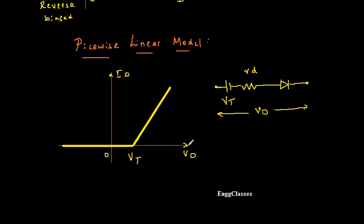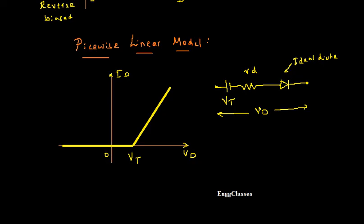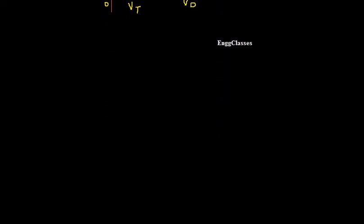The applied forward voltage is Vd. Vt is the knee voltage — 0.7 V for silicon and 0.3 V for germanium. After that the diode starts conducting, but there is still dynamic resistance Rd for the flow of current. The component in the equivalent circuit is the ideal diode. This is the equivalent circuit and these are the VI characteristics of the piecewise linear model.